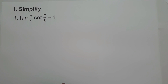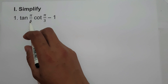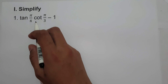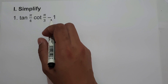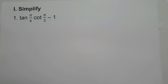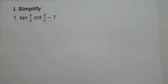In this video, let us simplify tangent pi over 4 times cotangent pi over 3 minus 1. In order for us to simplify the given expression, let us convert the given radians to degrees by multiplying 180 degrees over pi.